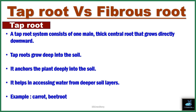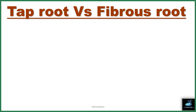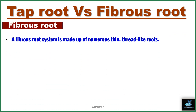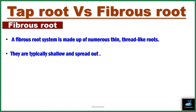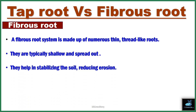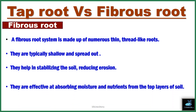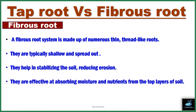Let's move on to Fibrous Root. A fibrous root system is made up of numerous thin, thread-like roots. They are typically shallow and spread out. They help in stabilizing the soil, reducing erosion, and are effective at absorbing moisture and nutrients from the top layer of soil.